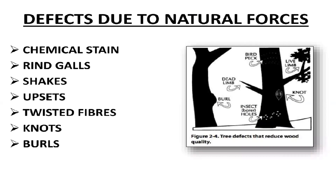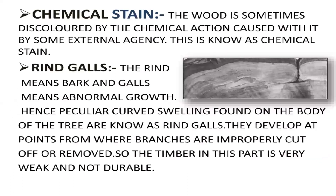This figure shows three defects which reduce the wood quality — how burls occur, how knots and dead limbs appear in a tree. First, chemical stain: the wood is sometimes discolored by a chemical action caused by some external agency. This is known as chemical stain.